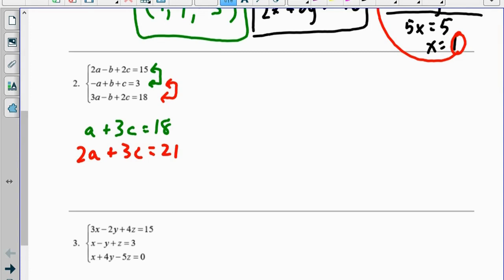Now I have a two by two system. So the goal is always to try and get two by two systems because we know how to solve them. So what I did in number two here was I got rid of the b's twice. You have to use two different pairs of equations to get rid of the same variable. And now that I've done that, now it's just a matter of doing a two by two system.